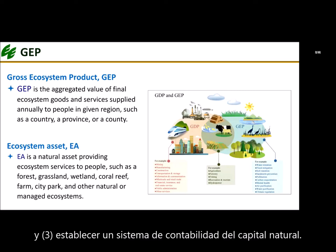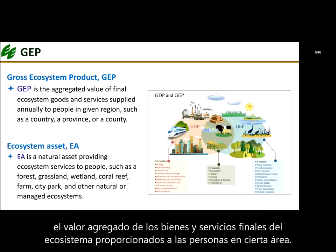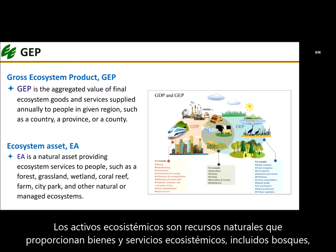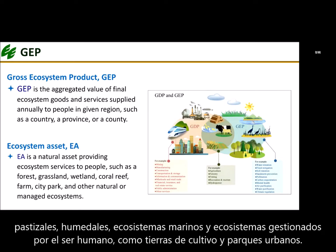In order to account for the contributions of nature to humanity, we define GEP as the aggregate value of final ecosystem goods and services provided to people in a given area. Ecosystem assets are natural resources that provide ecosystem goods and services, including forests, grasslands, wetlands, marine ecosystems, and human-managed ecosystems such as farmlands and urban parks.